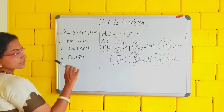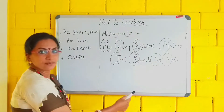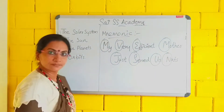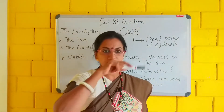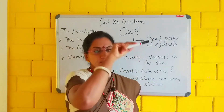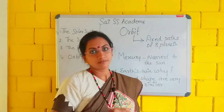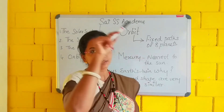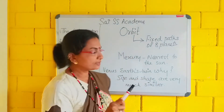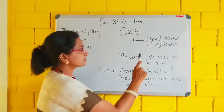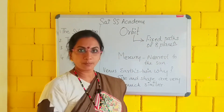So here we covered first the solar system, second the sun, and the planets. Next we are going to the topic orbit. What do you mean by orbit? The sun is at the center of the solar system and the eight planets are rotating around the sun. These planets have a fixed path to rotate around the sun. The fixed path of the planets for rotating around the sun is known as orbit.